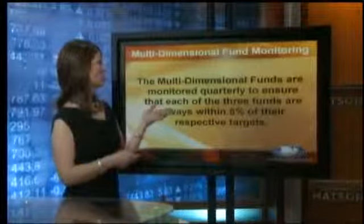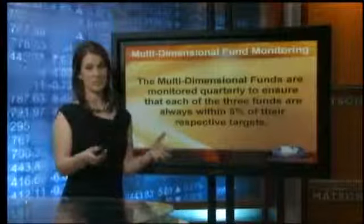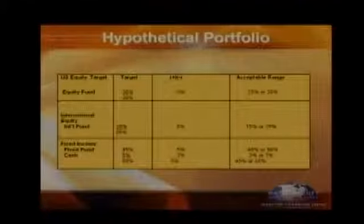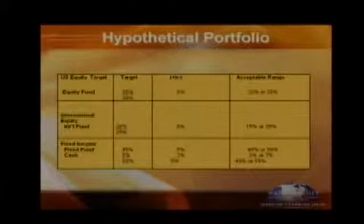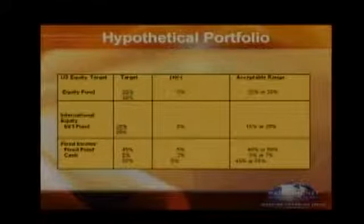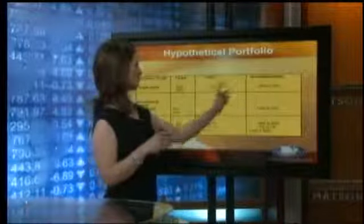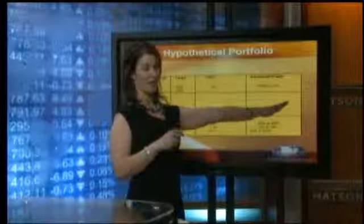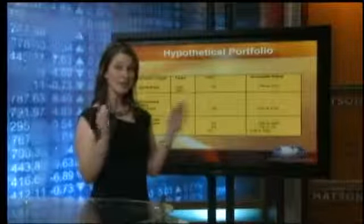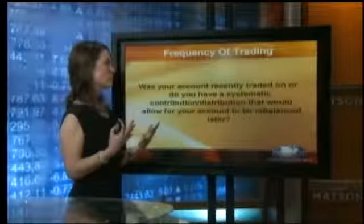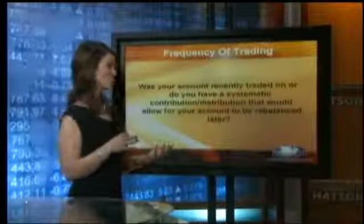At the fund level, the multidimensional funds are monitored quarterly to ensure that each of the three funds are always within 5% of their respective targets. We have US equity, international equity, and fixed income. Their targets are 30% in US equity, 20% international, and 50% in fixed income including cash. We don't want any of these to get more than 5% off their target. The acceptable range for US equity is 25% to 35%, and for international it is 15% to 25%. If we get outside of that range, we sell off or buy more to rebalance. Other considerations include whether the account was recently traded, or if there's a systematic contribution or distribution already planned — in which case we won't generate another trade if one is already coming.